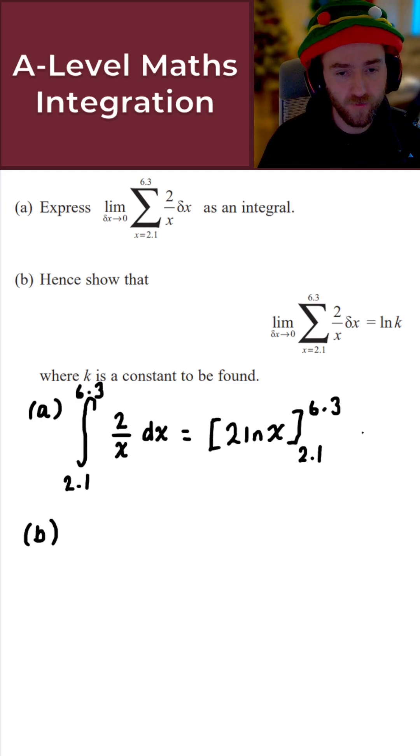Now to deal with the limits, we start by substituting in the upper limit, which is 6.3, and then subtract the lower limit from the upper limit. Nice and easy.